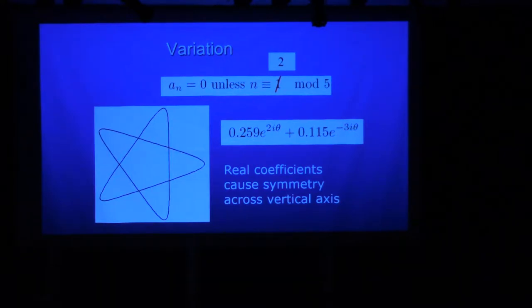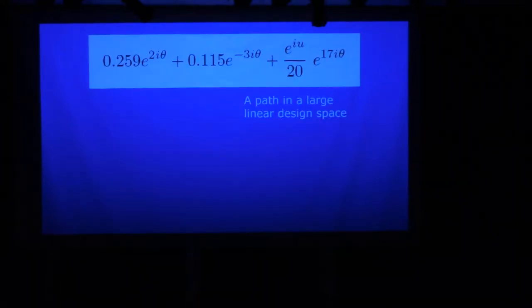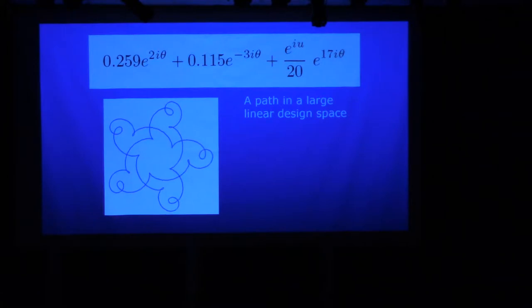The fact that you have real coefficients here is what's causing that symmetry across the horizontal axis. So I took that trace and then I added on just some amount of this ingredient with the same symmetry. 17 is 2 more than 5, so this is going to preserve that special kind of fivefold symmetry that the other curve had. I'm thinking of this as a path in a large design space, and it looks like this.